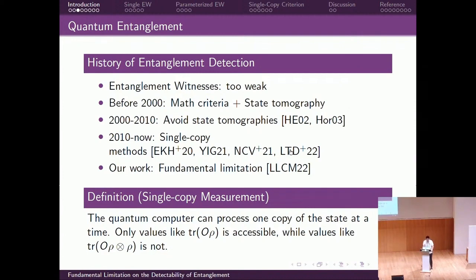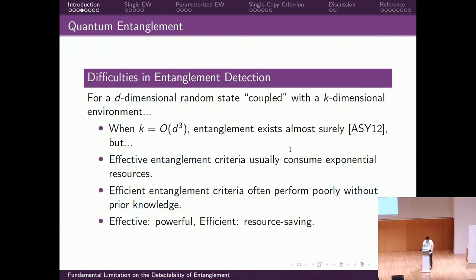This is even more interesting if we consider the following fact. For a D-dimensional random state coupled with a K-dimensional environment, when K is not too large, entanglement exists almost surely. However, effective entanglement criteria usually require exponential resources, and efficient entanglement criteria often perform poorly without prior knowledge — that is, if the state is completely random to you. Here, effective means powerful: if the state is entangled with high probability, the criteria should detect that. Efficient means resource-saving, not requiring a large number of measurements.